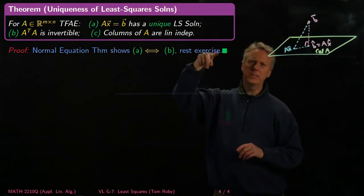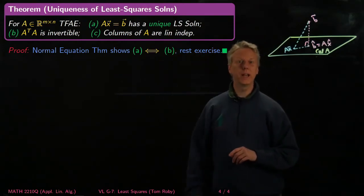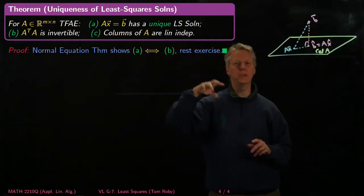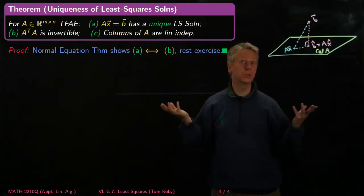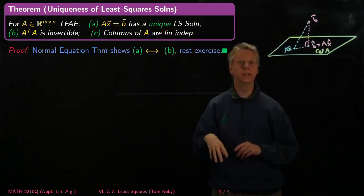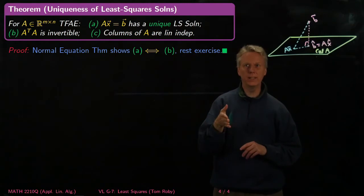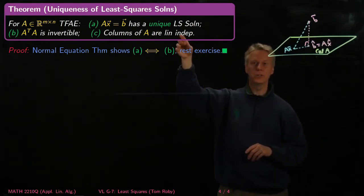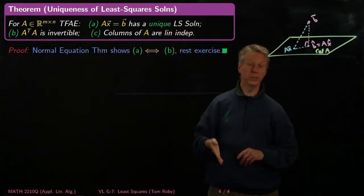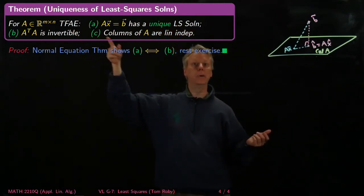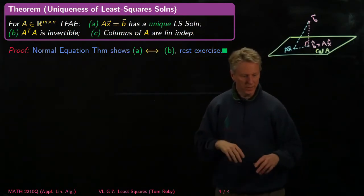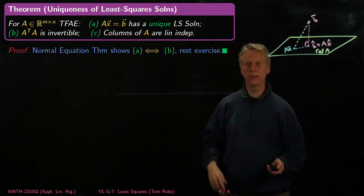And then showing B and C as equivalent is not that hard. It's a good exercise. You have to be careful to remember that A is rectangular, so you can't use things like the invertible matrix theorem, which only apply to square matrices. But it turns out that the columns of A being linearly independent, and thinking about things like how the rank can change. The rank of an m by n matrix whose columns are linearly independent is as big as it can be, is going to be n. So you can think about that on your own if you like, or look up the proof somewhere in a textbook.